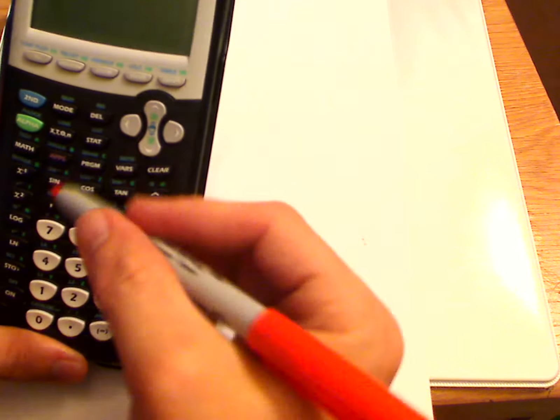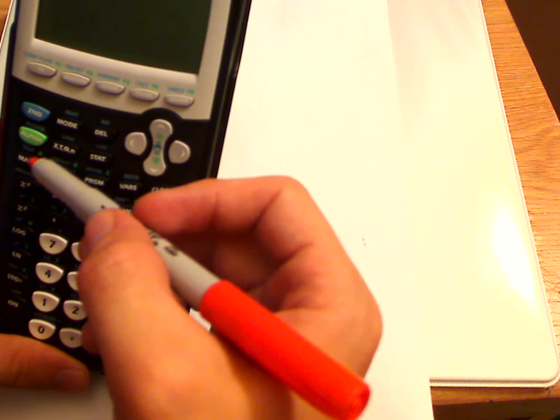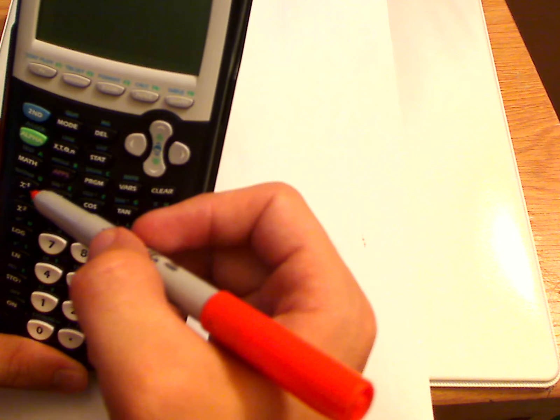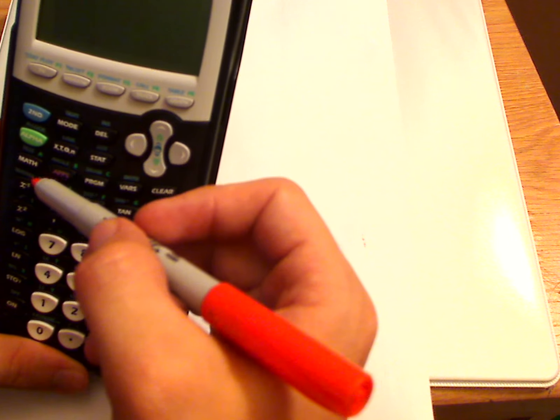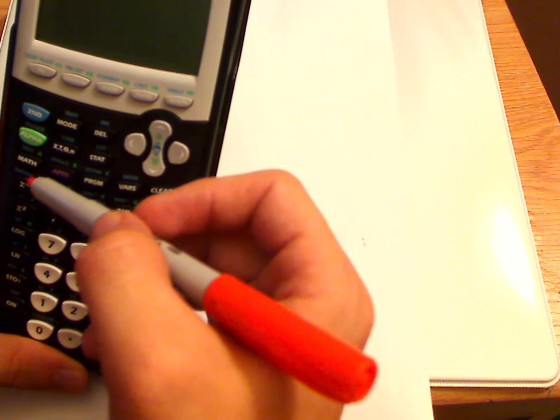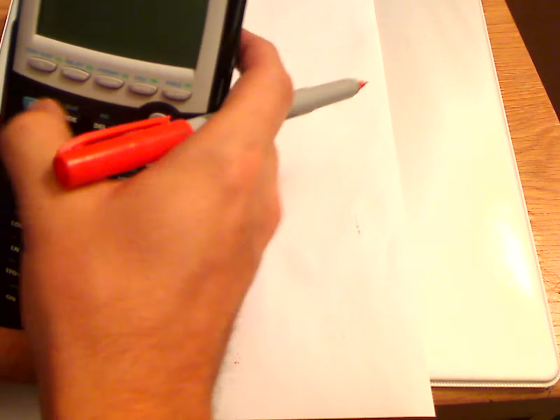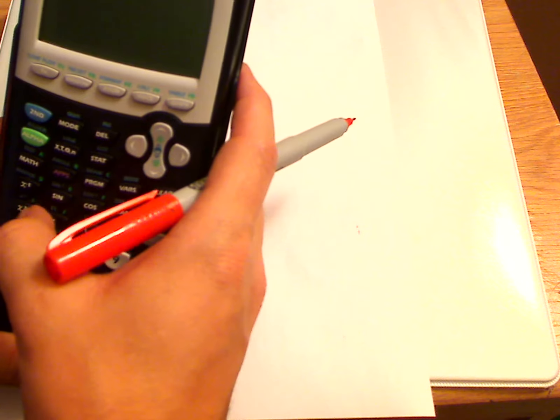You want to go to the matrix screen. The matrix screen is under x to the negative one—it's actually above and it's in the blue. Whenever something is in blue, to access it you push second and then that button.